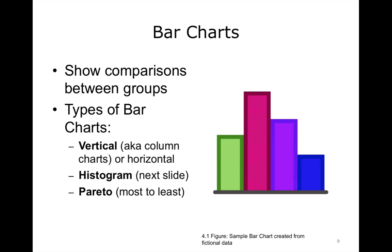We will start with bar charts. Typically, bar charts are used to show comparisons between groups — groups of people, hospitals, providers, or physicians. Bar charts can be vertical, also known as column charts, or placed on the side to become horizontal. There are also histograms and Pareto charts, where results are ordered from most to least. Bar charts are quite flexible, and there are a lot of different types.